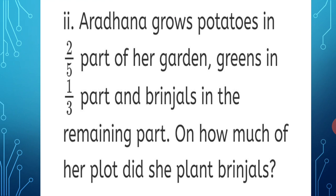The garden is considered as one whole part. Three different vegetables are grown: potatoes on 2 upon 5 part, greens in 1 upon 3 part, and we want to find the remaining part for brinjals.